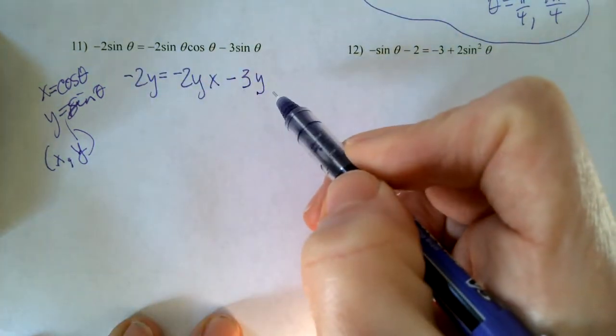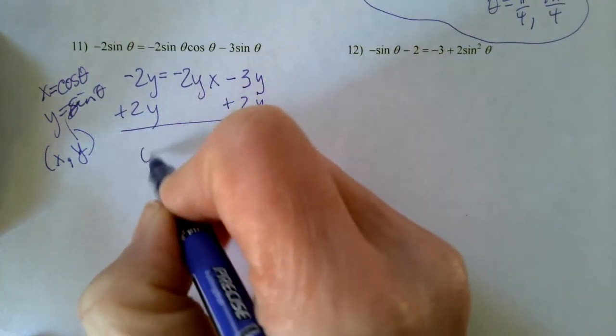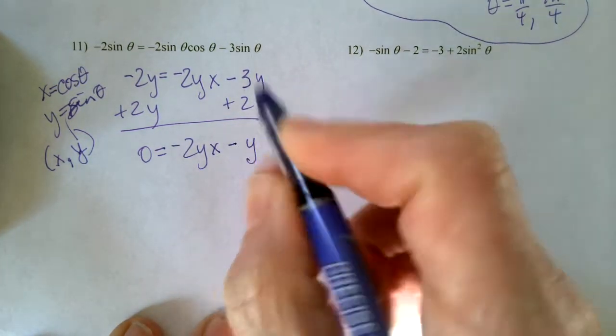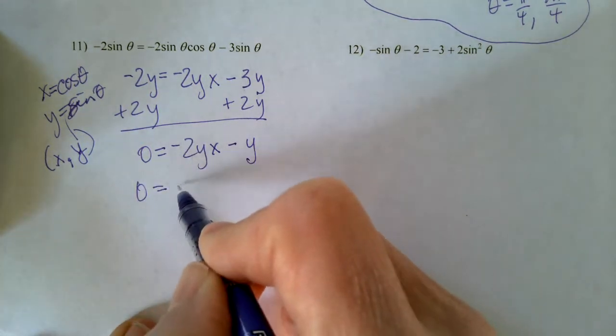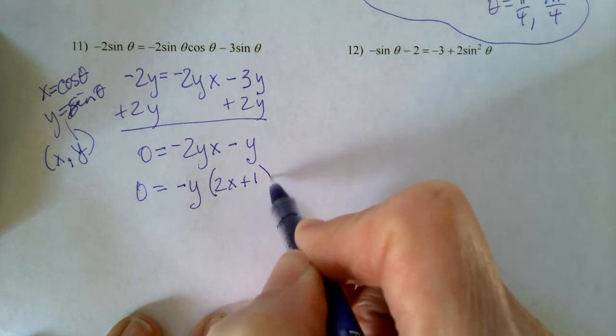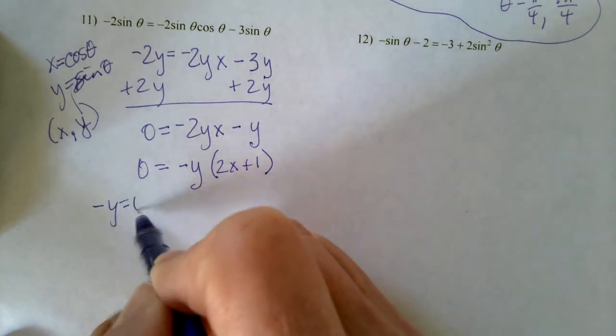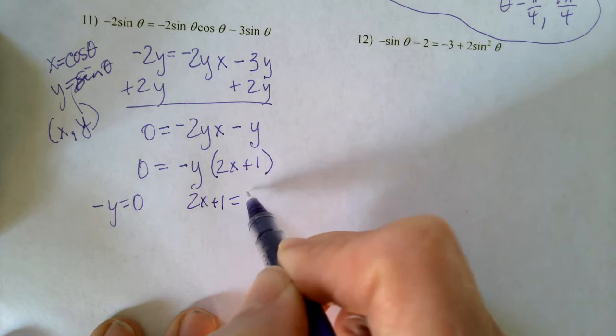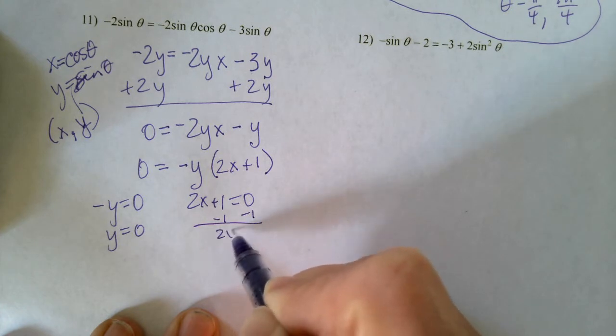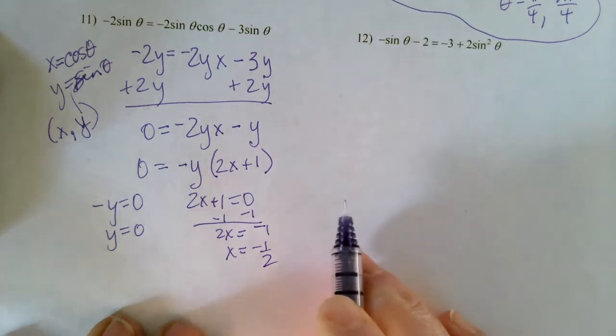And again, I'm going to get everything on one side and set it equal to zero. So I'll add 2y and I have zero equals negative 2yx minus y. I'll factor a y out, in fact a negative y out of each term. And that leaves me with 2x plus one. And then I'll set my factors equal to zero. So negative y equals zero and 2x plus one equals zero. So this is when y is zero and when x is negative one half.